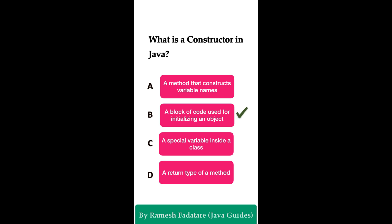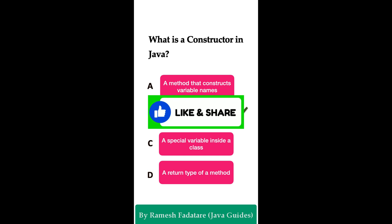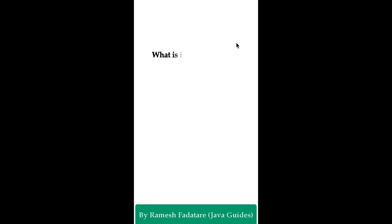The correct answer is option B: a block of code used for initializing an object. A constructor in Java is a special method used to initialize objects. When you create an instance of a class, the constructor gets called to initialize the object. A constructor has the same name as the class. Its primary purpose is to initialize the newly created object.